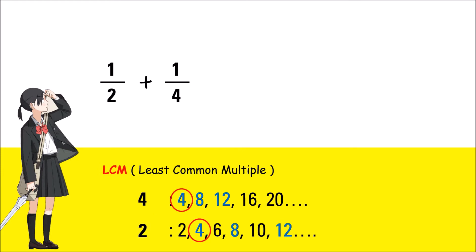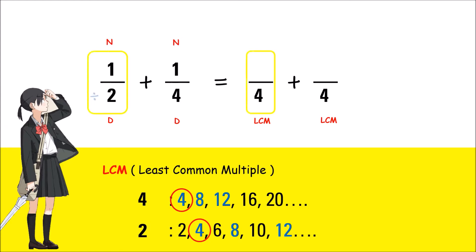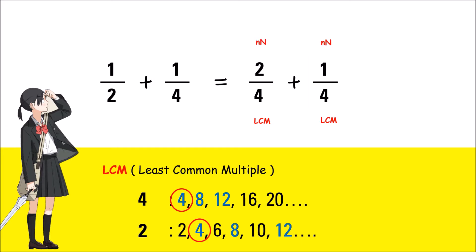To know more about LCM and other ways of getting it, you can check my other video about this. Now, back to what we are solving. Use the LCM to make like fractions. Divide the LCM by the denominator and multiply the answer by the numerator. 4 divided by 2 is 2; 2 times 1 is 2. 4 divided by 4 is 1; 1 times 1 is 1. The results will be the new numerators and the denominators will be the LCM. The LCM is now your LCD. Then add: 2 fourths plus 1 fourth is 3 fourths.